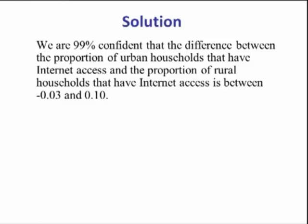So to interpret this, we would say we are 99% confident that the difference between the proportion of urban households that have internet access and the proportion of rural households that have internet access is between negative 0.03 and 0.10.